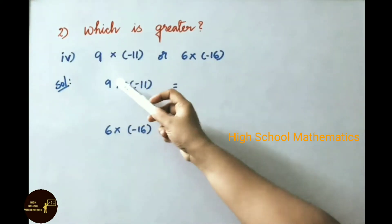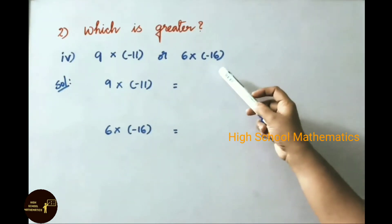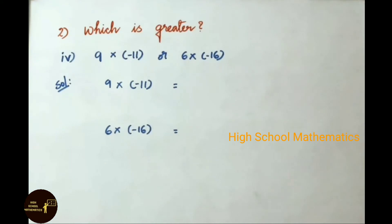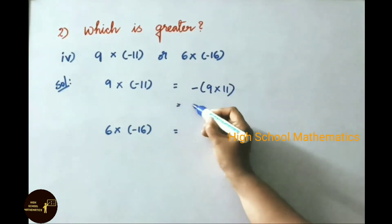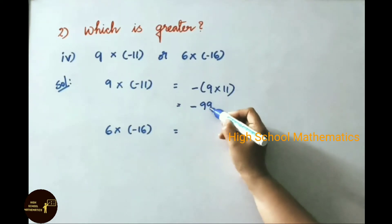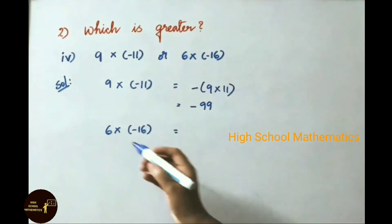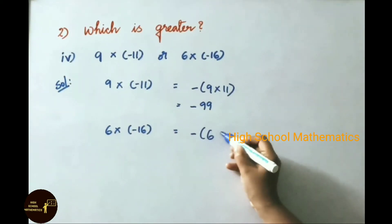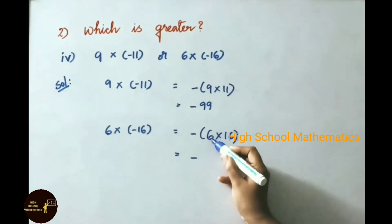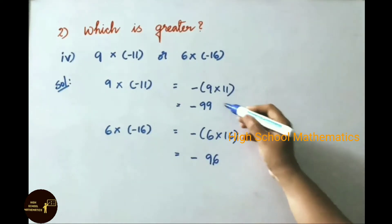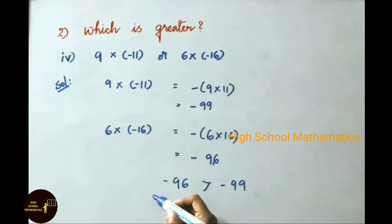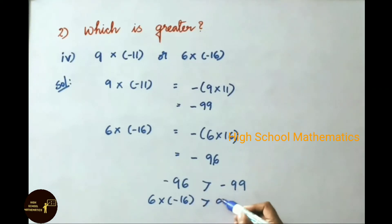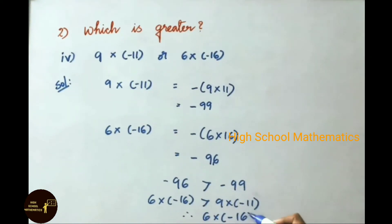Fourth sum: 9 into minus 11, or 6 into minus 16, which is greater? 9 into minus 11 equals minus of 9 into 11, that equals minus 99. And 6 into minus 16 equals minus of 6 into 16, that equals minus 96. Among these two, minus 96 is greater than minus 99. Therefore, 6 into minus 16 is greater.